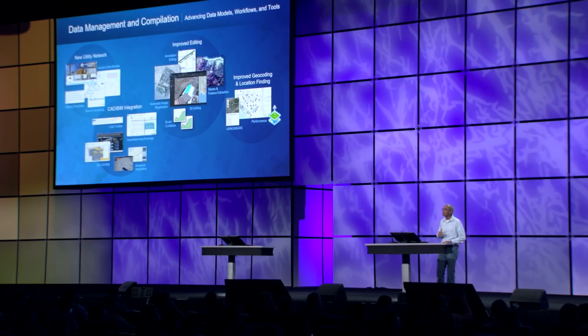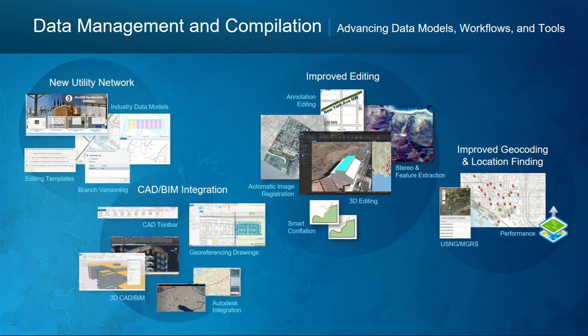Next I'll talk about capabilities that ArcGIS Enterprise and Pro bring to the table in addition to mapping, field mobility, and location analytics. The first is data management and compilation. The new utility network is a key aspect of this, advancing the information model in areas like multi-tier networks, sub-networks, and connectivity and containment associations — really the next generation of our offering for modeling utility networks. It also has improved transactions based on the underlying branch versioning model, with improvements in performance and scalability.